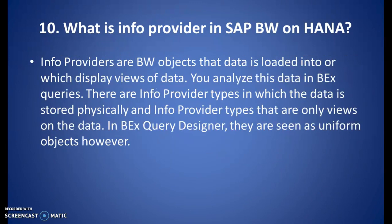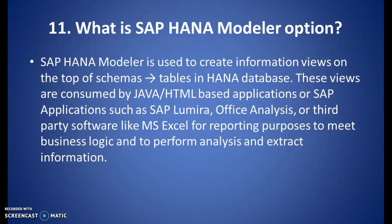What is an InfoProvider in SAP BW and HANA? InfoProviders are BW objects into which data is loaded, or which display views of data, and you analyze this data using BEx queries. There are InfoProvider types in which data is stored physically, and InfoProvider types that are only views of data. In BEx Query Designer, they are seen as uniform objects. The SAP HANA Modeler is used to create information views on top of schemas or tables in the SAP HANA database. These views are consumed by Java/HTML-based applications or SAP applications such as SAP Lumira, Office Analysis, or third-party tools like MS Excel for reporting and analysis.